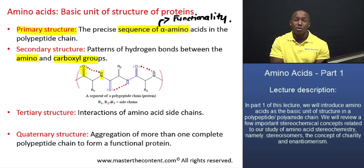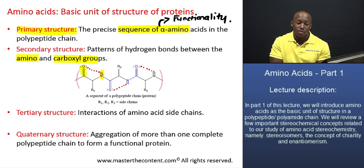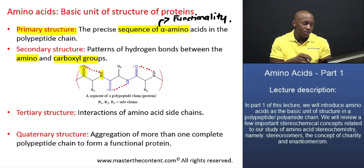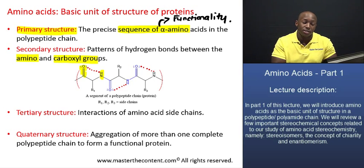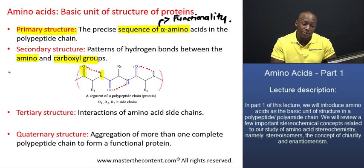A hydrogen bond is basically a bond formed between a proton that is bonded to a highly electronegative element and another highly electronegative element. This internal hydrogen bonding is what actually gives rise to the secondary level of organization, resulting in the formation of what we refer to as alpha helices and beta pleated sheets.